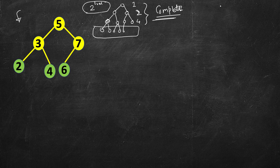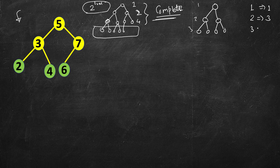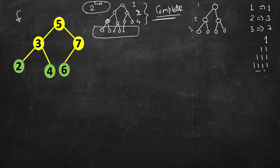If a complete binary tree has just one level it will have one node. In the balanced case where everything is filled: two levels gives three nodes, three levels gives seven nodes. This is equivalent to a binary representation — one bit is 1, two bits is 3, three bits is 7, four bits is 15.